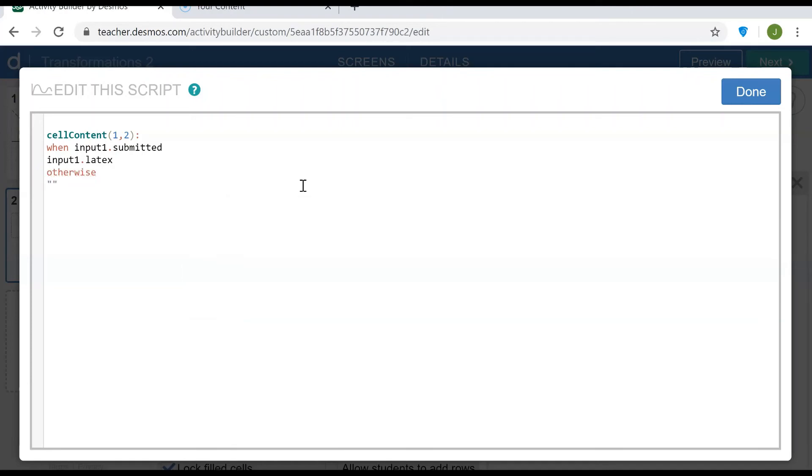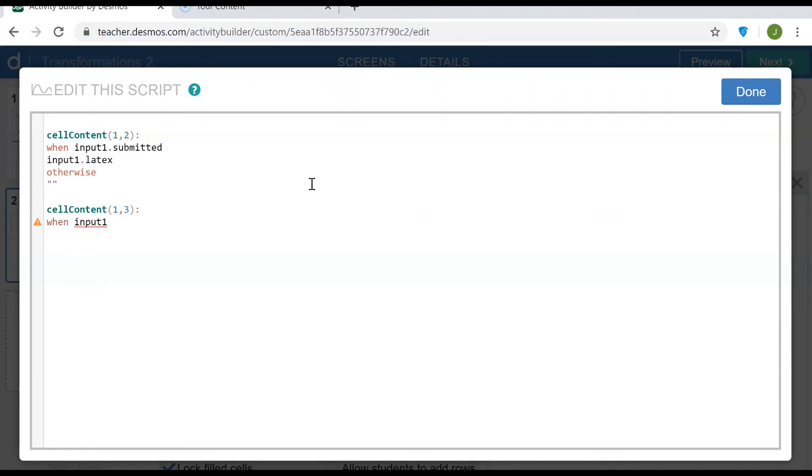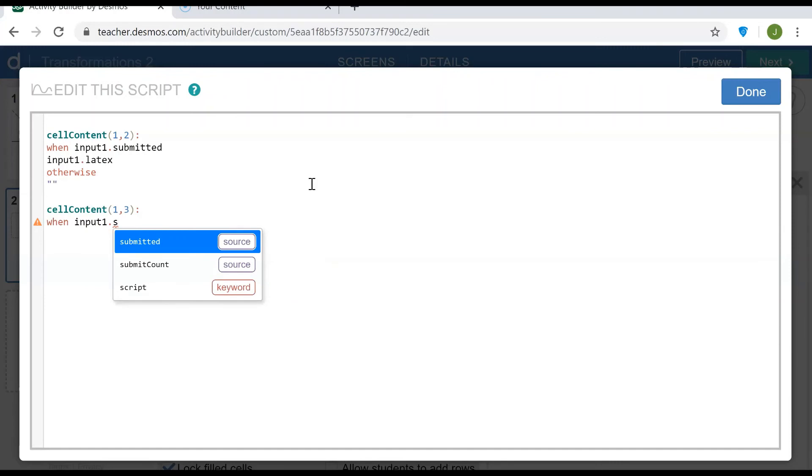In the third cell, row 1 column 3, when input1.script.isCorrect, that variable that we defined, when that is true I want the cell to say correct, and otherwise incorrect. So let's take a look.